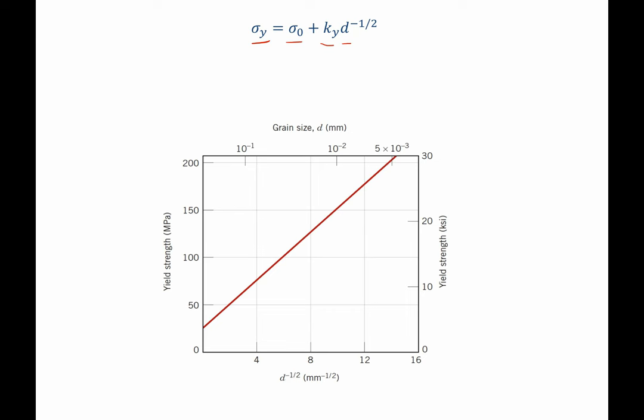If you take a look at how this plot looks, it's linear, but it's only linear because x is d to the negative one-half when plotted against sigma-y, our yield strength. Therefore, because it's linear, it should have the form y equals mx plus b, or in other words, y equals b plus mx.